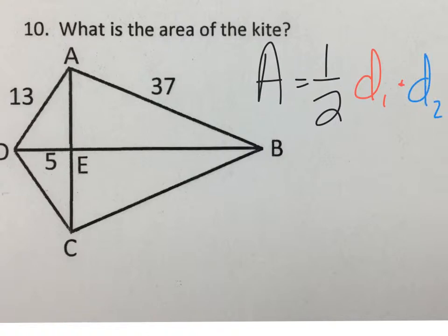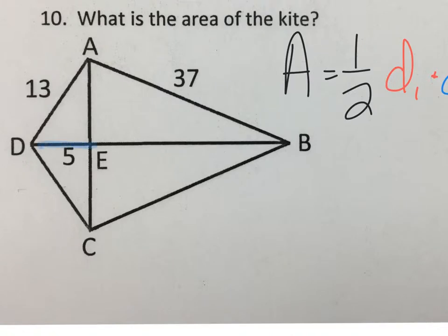Just to be clear, a diagonal goes from one corner all the way over to the other corner. So this would be a diagonal length and this would be the other diagonal length. Now we don't know what either one of those are.